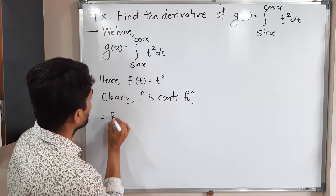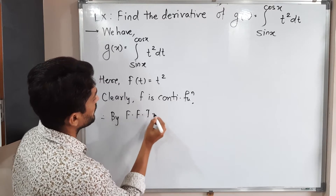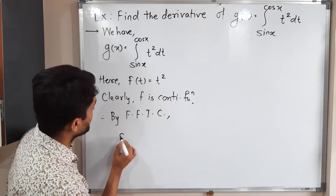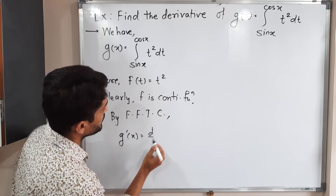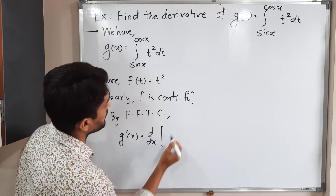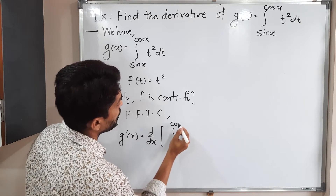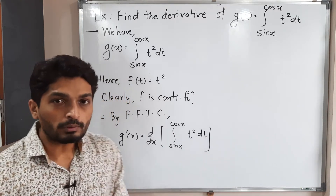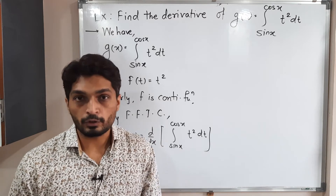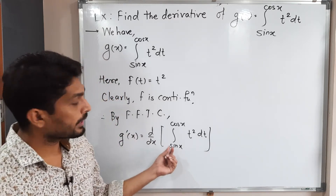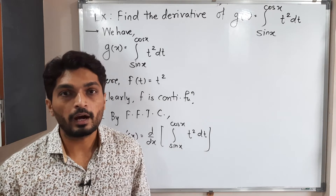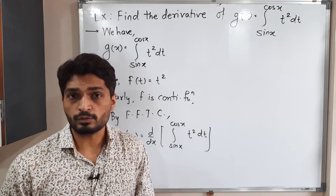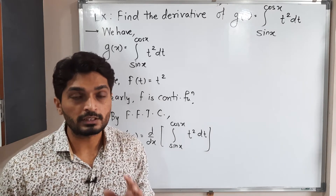Therefore, by the First Fundamental Theorem of Calculus, the derivative of g equals the derivative of the integral from sine x to cos x of t squared dt. But the problem is that for the First Fundamental Theorem of Calculus, the lower limit of integration should be a constant. Here both limits, sine x and cos x, are functions of x, so we cannot apply the theorem directly.